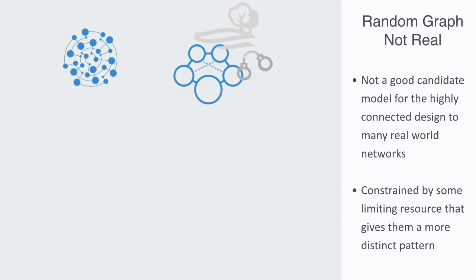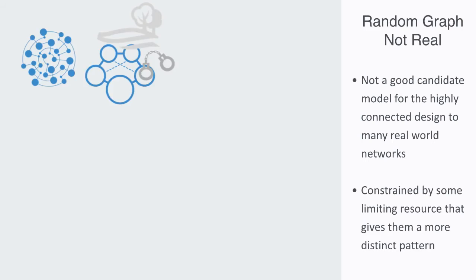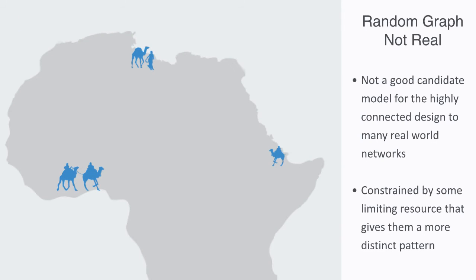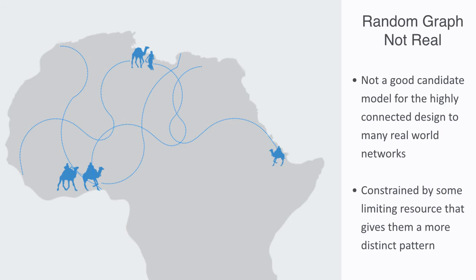If we look at some network like the traditional trading routes across the Sahara desert in Africa, it may look somewhat random at first glance. But we know it is not, because for the caravan of camels and traders who created these networks, setting out across the Sahara in any random direction would of course have been fatal to them.